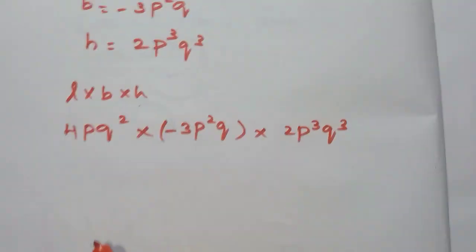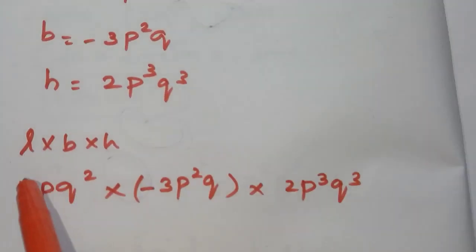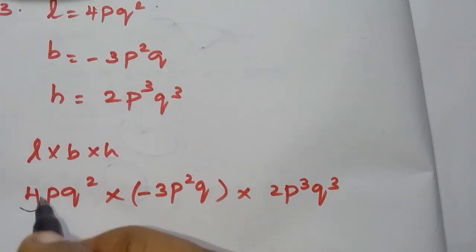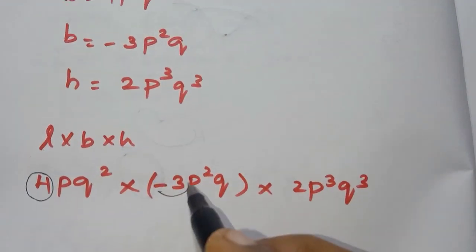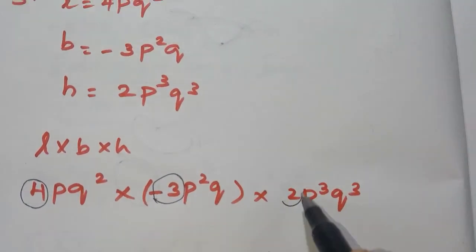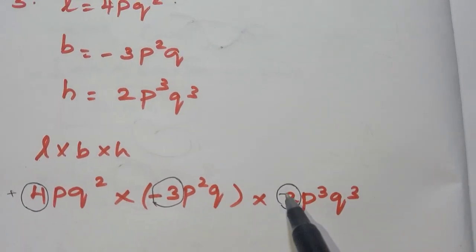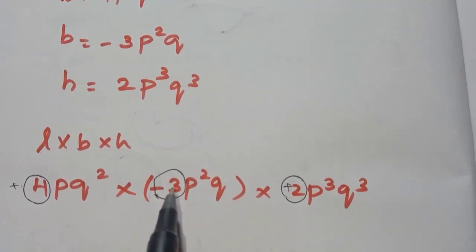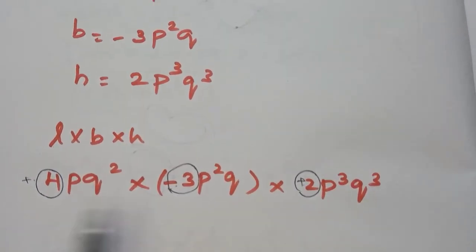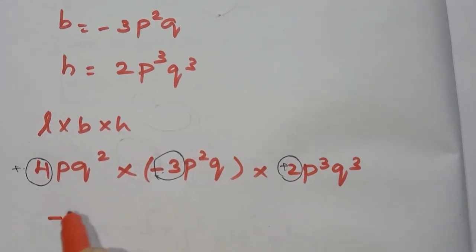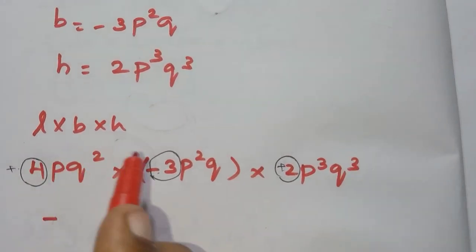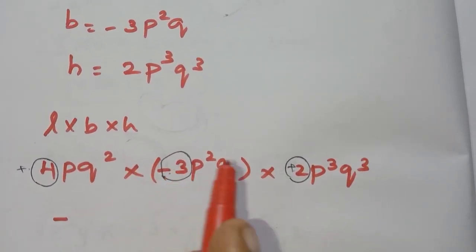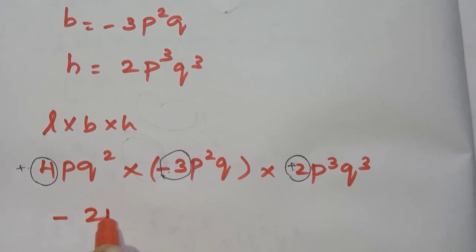First, multiply the numbers. The numbers are 4, minus 3, and 2. Plus into plus is plus; plus into minus is minus. So the sign is minus. 4 threes are 12, and 12 twos are 24.